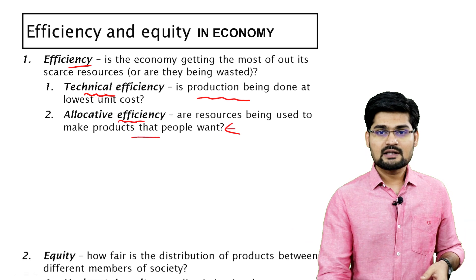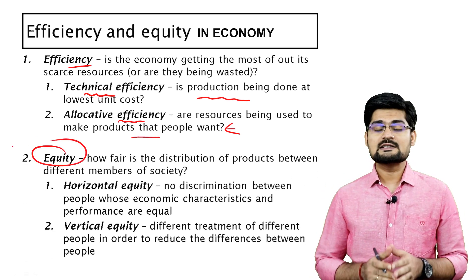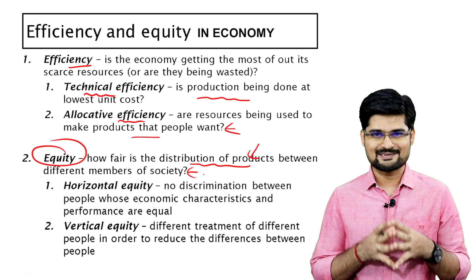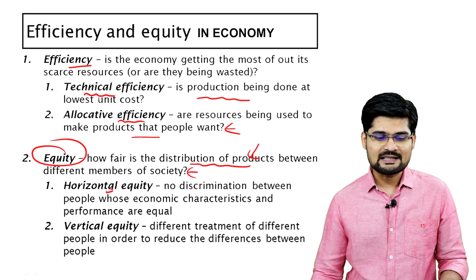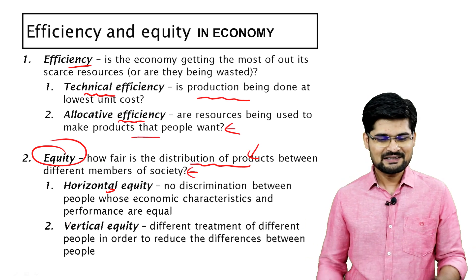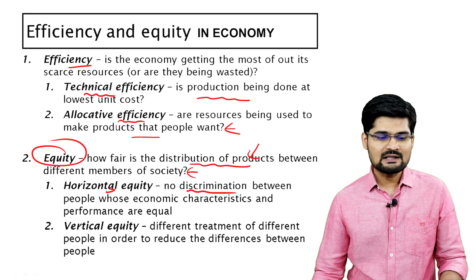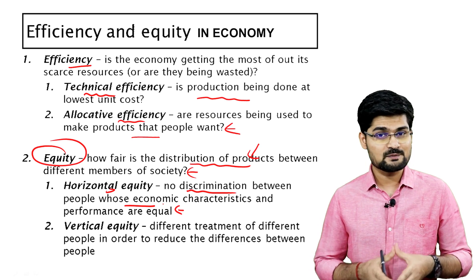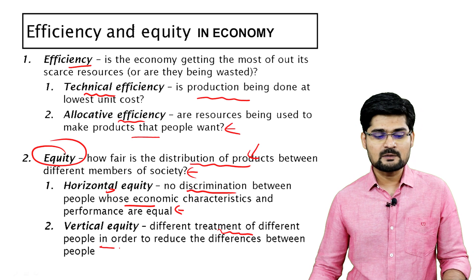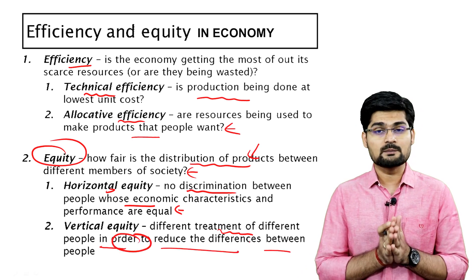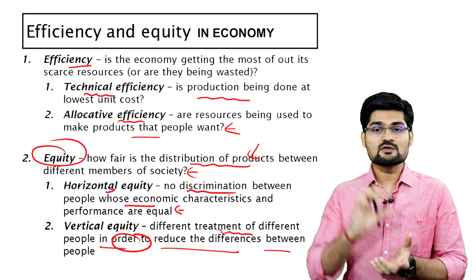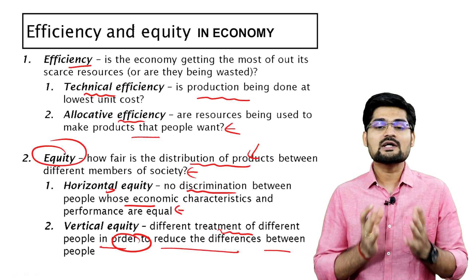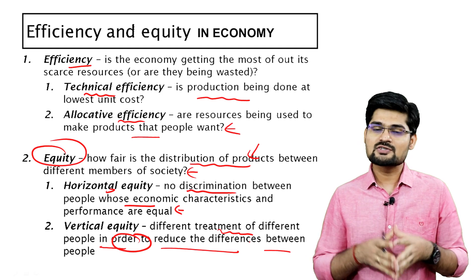When we say equity, it's about how fair is the distribution of products between different members of society, and this is measured in two ways: horizontal equity and vertical equity. Horizontal equity means no discrimination between people whose economic characteristics and performance are equal. Vertical equity means different treatment of different people in order to reduce differences — the gap between rich and poor should be reduced. This covers both horizontal and vertical integration of society through the equity principle.